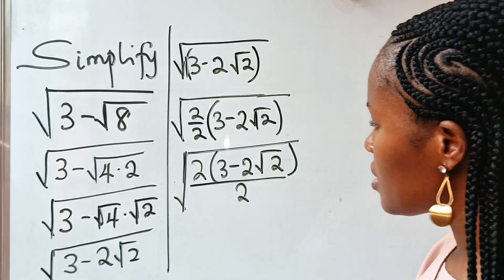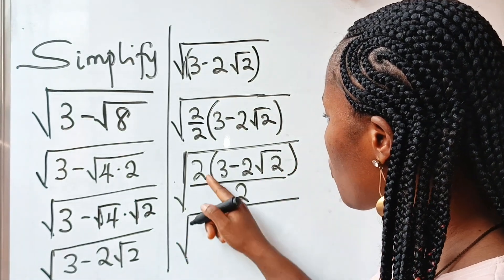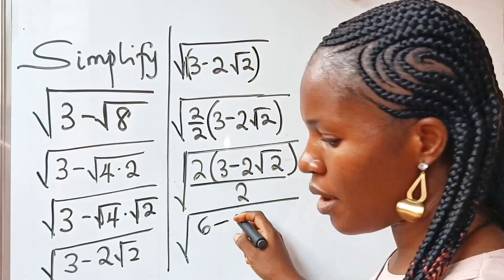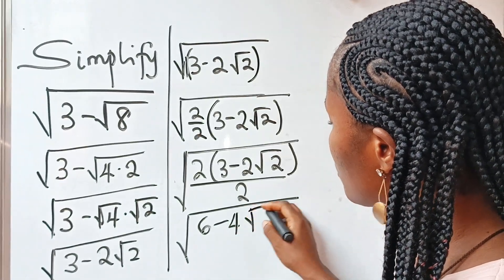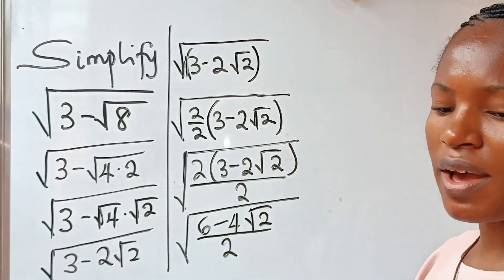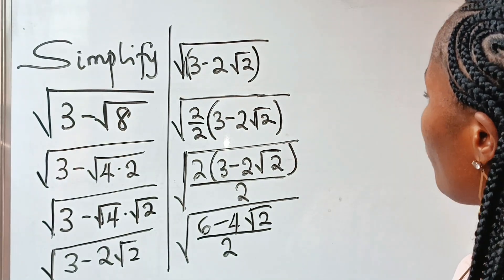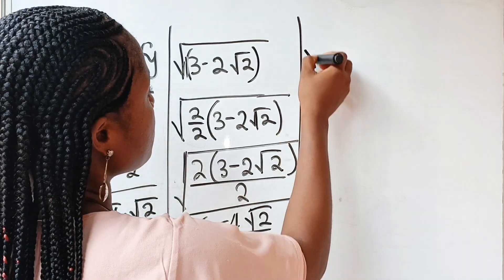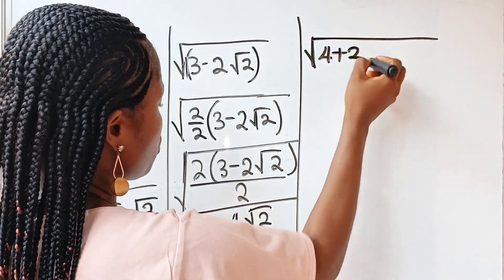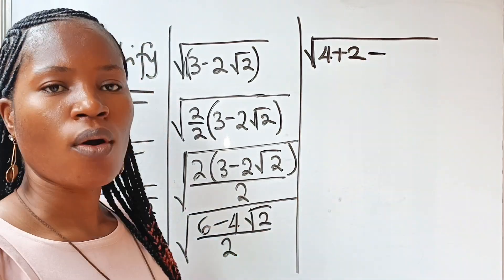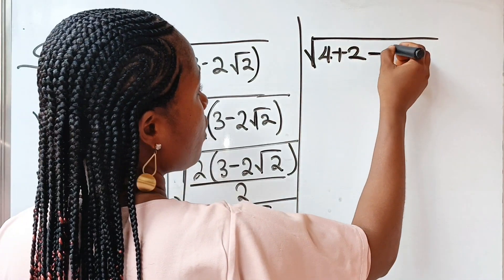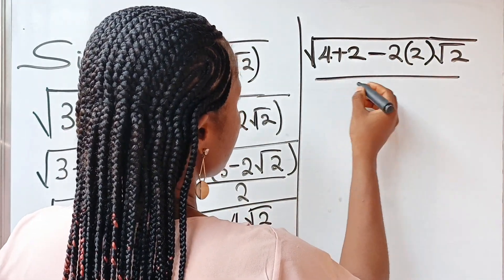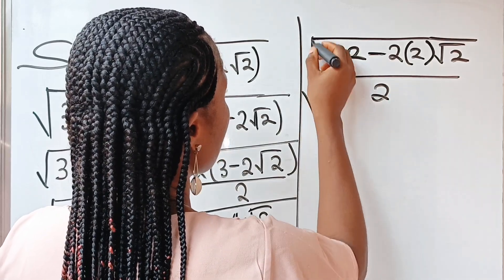Let us open these brackets. We have square root of two times three, which gives us six; two times minus two root two gives us minus four root two. Everything divided by two. Now six can be expressed as four plus two, so we write this as square root of four plus two minus four root two, all divided by two.